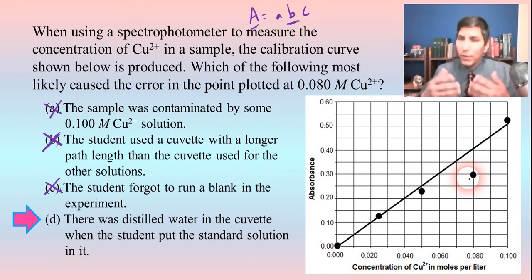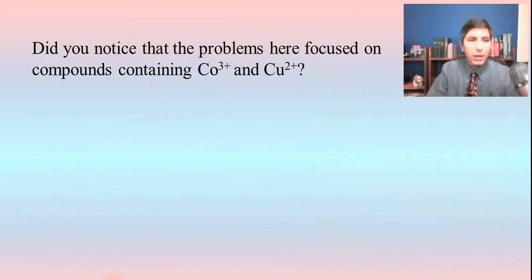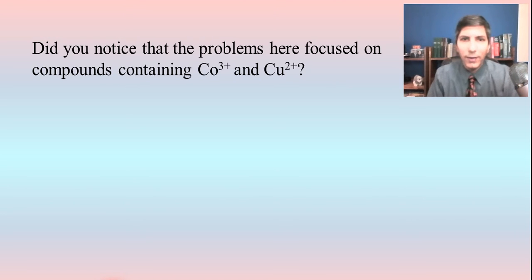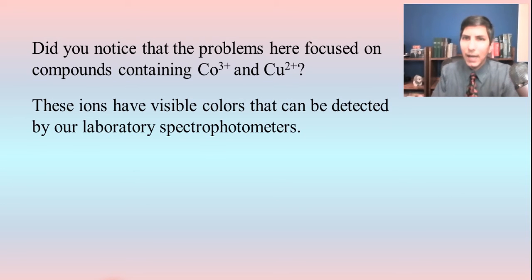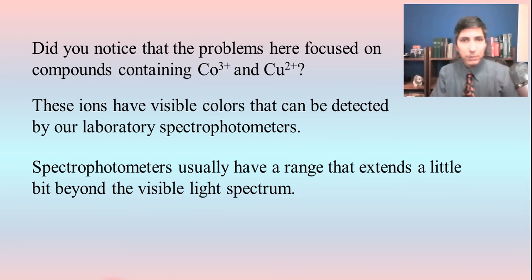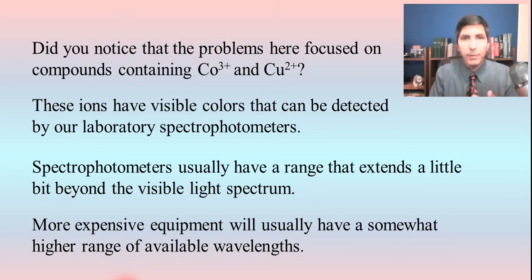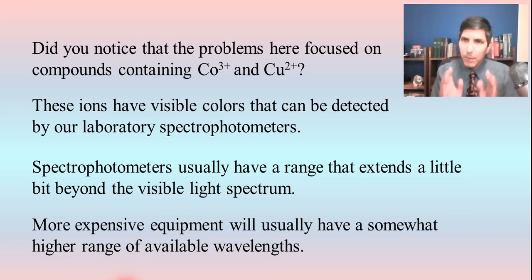If you know Beer's Law and how the experiment works, you should be able to answer questions like this. You might have noticed that in the examples in this series of videos we focused on compounds with very distinct colors — like cobalt ions, copper two ions, and the bright red iron thiocyanate — because these ions have actual visible colors that we can detect in laboratory spectrophotometers, which focus on the visible light spectrum.